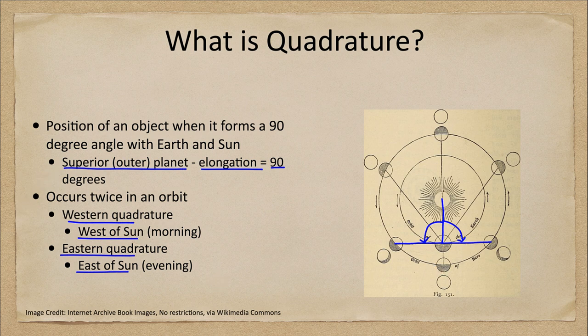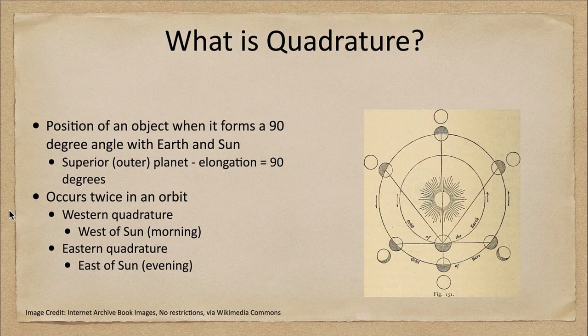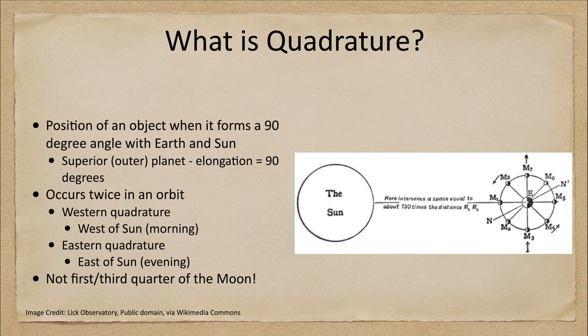Now, how does this work for the moon? Because the moon can be at quadrature as well. Well, this is not the time of first or third quarter moon, which might be your first thought.